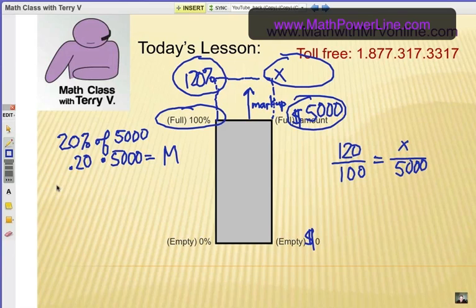Put that in your calculator or do it the long way on paper and you will get your markup amount. Obviously, a markup, just like tax, is added on. You're going to take your original cost of your item, which is 5,000 in this example, and add that markup amount. Two steps: find the markup amount and then add it on. The proportion method I like better. It's one step.